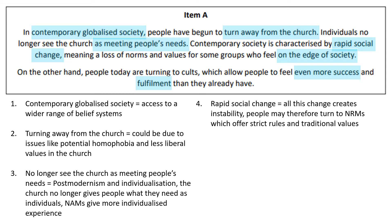Number four: the next highlighted part is about rapid social change. In a society where there's big change happening all the time in terms of technology, we can link here to Beck's risk society — how family life is more risky, everything's a bit more risky and unstable. Therefore people might turn to NRMs which offer strict rules and traditional values to give them a sense of certainty and stability. For example, people joining the People's Temple and going to live in Jonestown might have been drawn by that stable, predictable new lifestyle.